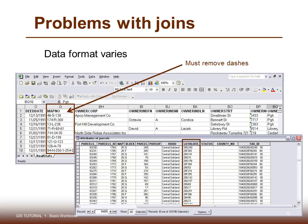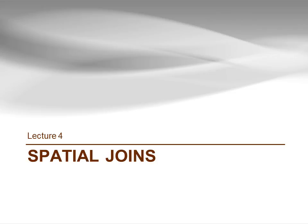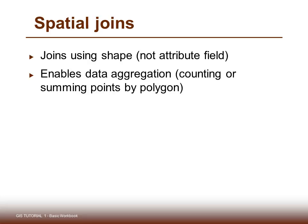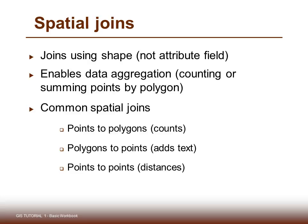Next, we'll look at spatial joins. When you do a spatial join, you're using the shape and not the attribute field in order to join the data together. This enables data aggregation, such as counting or summing points by polygon. Common spatial joins are points to polygons to do counts, polygons to points to add text, and points to points to do distances.